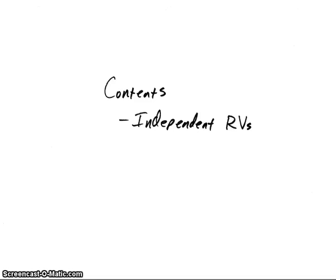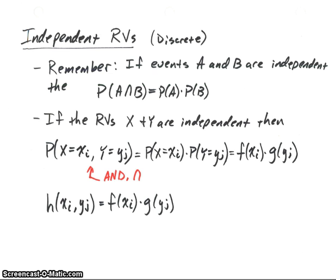In this video, we're going to look at independent random variables. Remember when we were talking about probability, if we had two events A and B, and we said that those two events were independent, we had this property that the probability of A intersect B was equal to the probability of A times the probability of B.